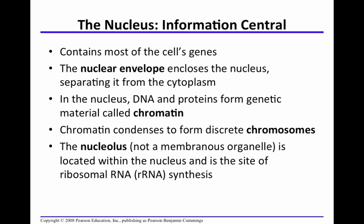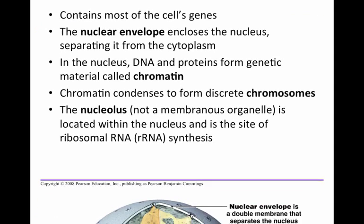You may not have heard of chromatin, but I'm sure you've heard of chromosomes. Chromosomes are just what is formed when the chromatin condenses. Also, there's a nucleolus located within the nucleus, and it is at this location that ribosomal RNA is made. This is where the ribosomal subunits are formed, and if you recall, the ribosomes are the site of protein synthesis.